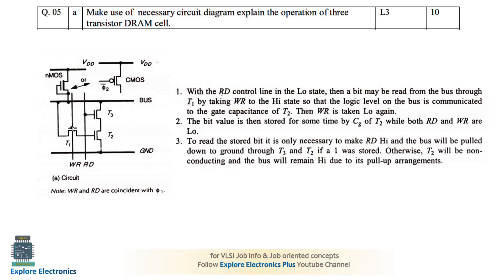Making WR equal to 1 turns on transistor T1. At this time RD should be 0, so T3 will be off. The value present in the bus is the bit we are supposed to write. This bit is taken into T2 through T1 — whatever data is present in the bus passes to the gate of T2. The T2 gate capacitance will be charged, and that stored charge represents the written data.